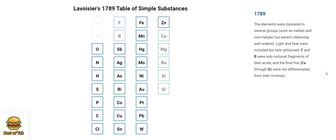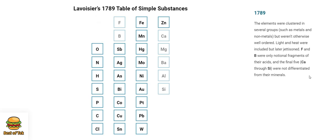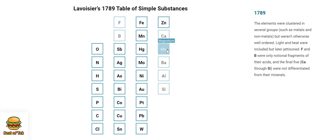The elements were clustered in several groups, such as metals and nonmetals, but weren't otherwise well-ordered. Light and heat were included but later jettisoned. F and B were only notional fragments of their acids, and the final five — C, A through C — were not differentiated from their minerals.